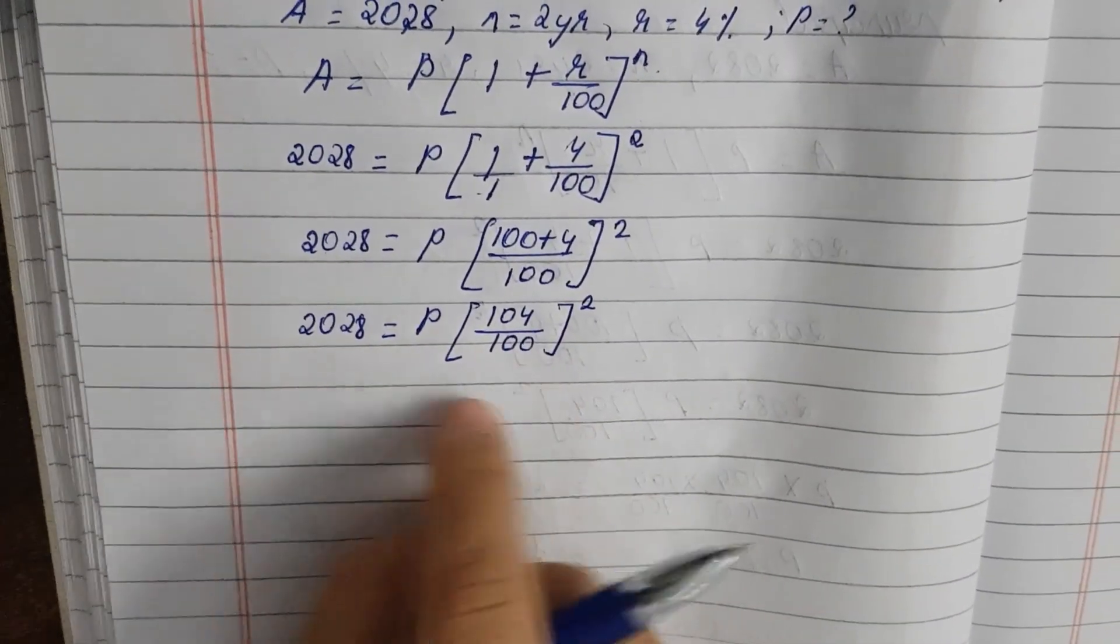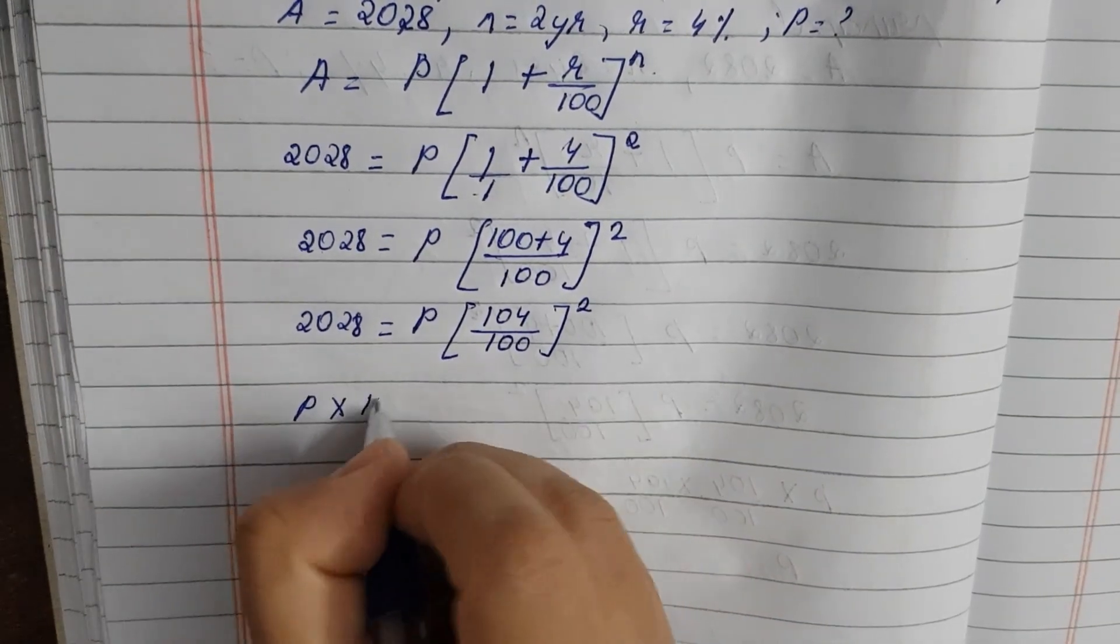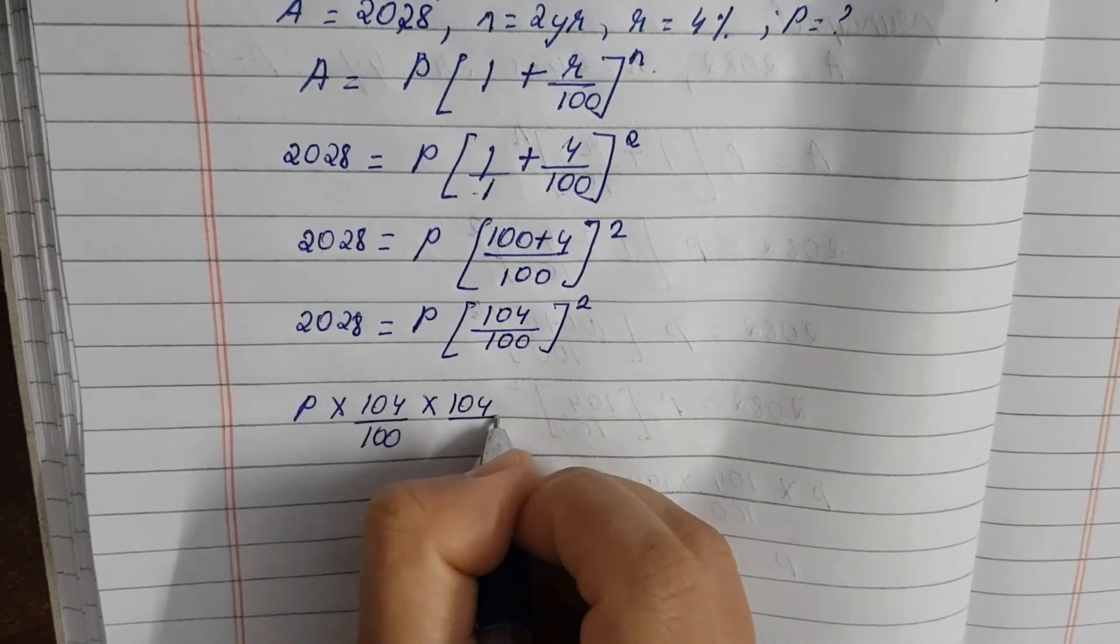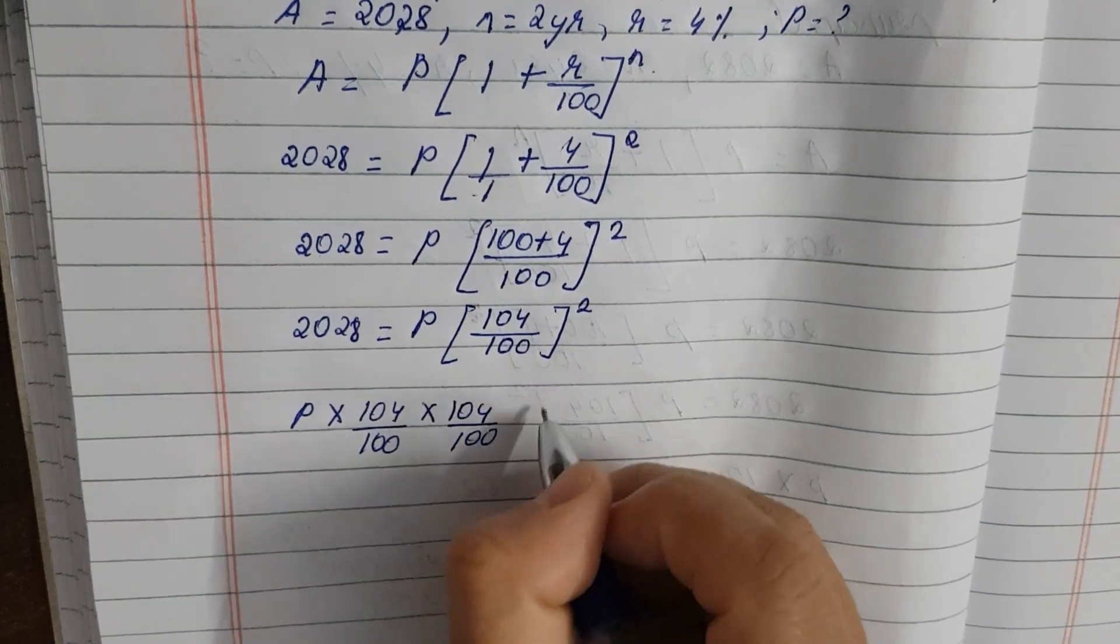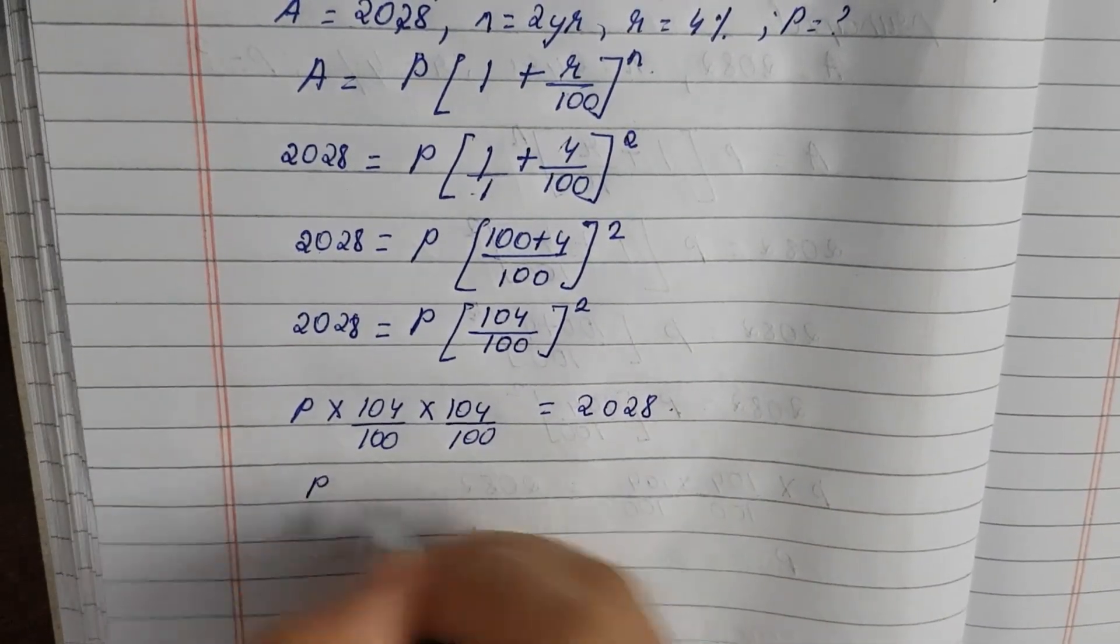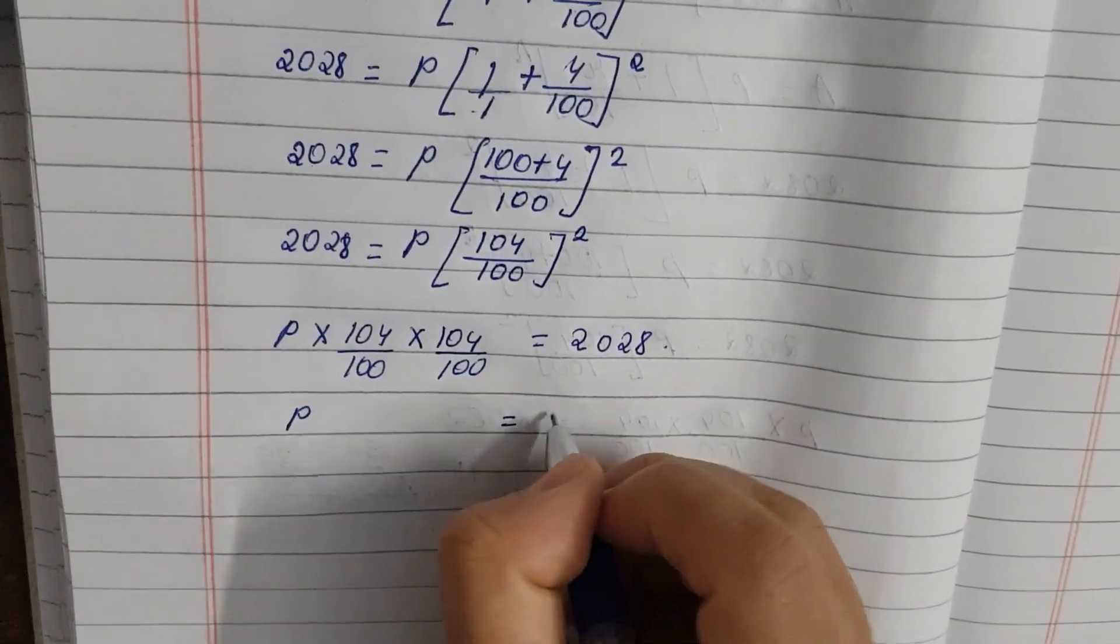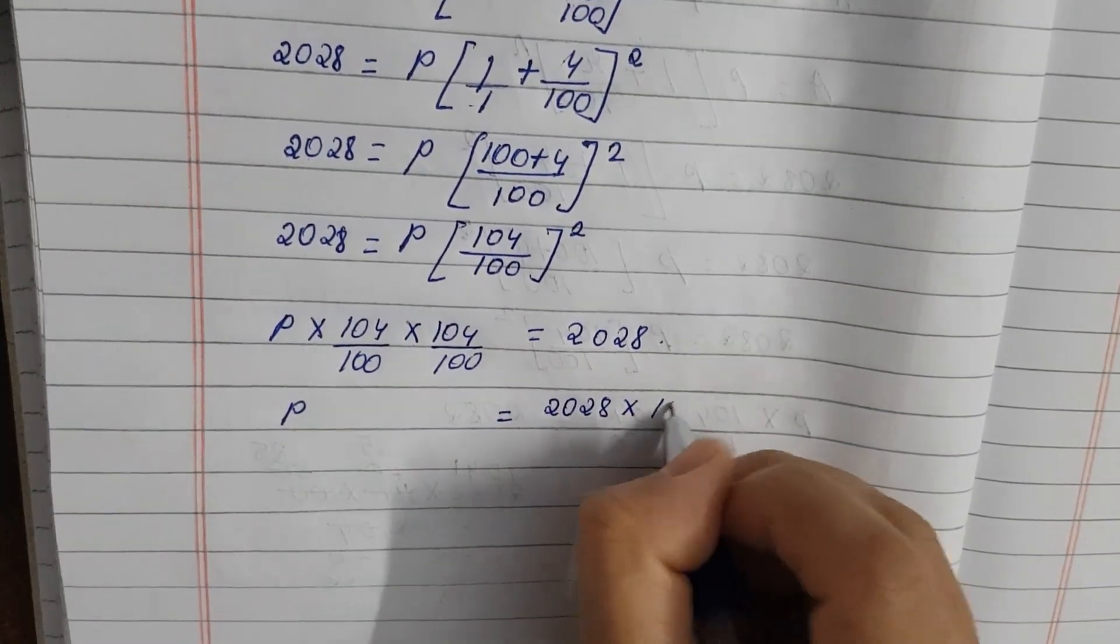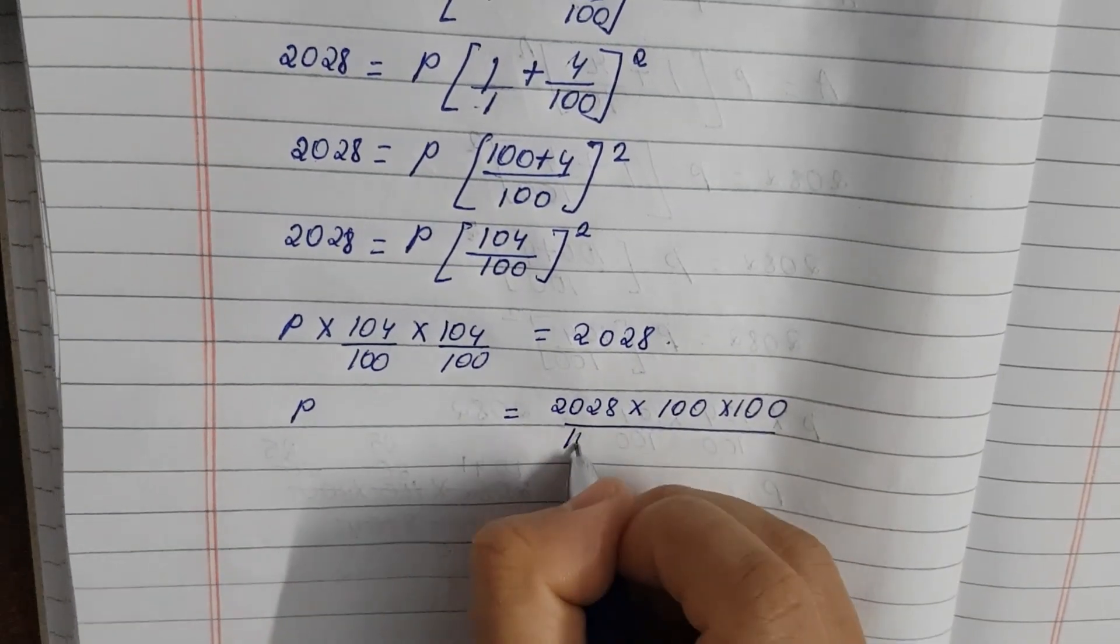And now we will change the principle. So we can change the principle. So principle into 104 divided by 100 into 104 divided by 100, 2 power, is equal to 2028. So principle, we will change the principle. So 2028 into denominator will become numerator and the numerator will become denominator.